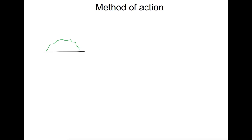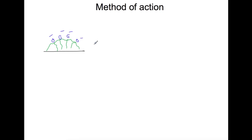When we introduce some soap, the tails of the soap, which are non-polar, will dissolve into the stain. The heads of the soap, which are polar and negative — we've dissolved a salt into water so they've dissociated — they stay on the outside of the stain. We then need to agitate that, which you would do by rubbing it or if it was in a washing machine. Agitation lifts the stain from the clothing or from whatever you're trying to wash.